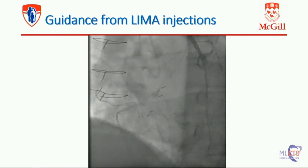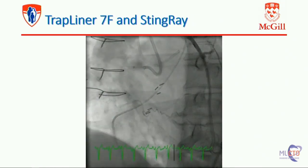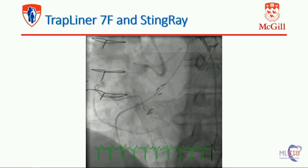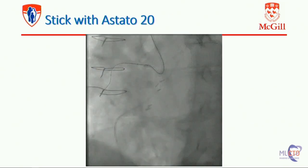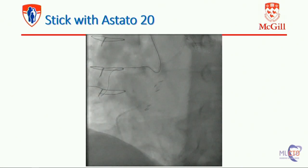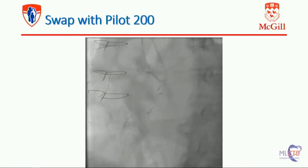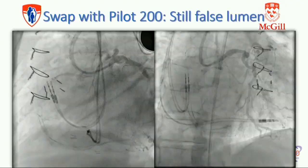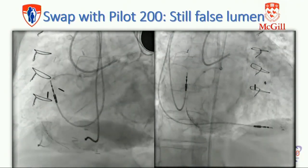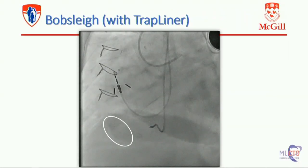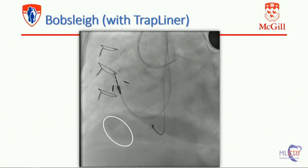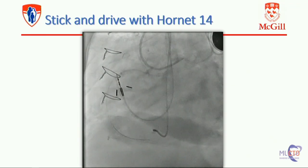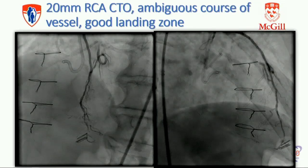The microcatheter is advanced — you can see it because it's a knuckle inside the vessel, but that's fine. You can deliver your Stingray with the trap liner in place, taking care of the inflow. We used the Stout wire, which allows very predictable puncture because it's a very strong wire. With the Pilot 200, we were able to reopen the vessel with quite effectiveness. You can swap with Pilot 200 and sometimes fail — in that case you can do the bobsleigh technique, deflating the balloon and pushing forward. With the trap liner, there's much less hematoma when doing the bobsleigh. Then we did the stick-and-drive with the Hornet 14 in the vessel with success.